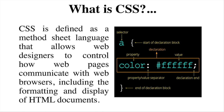CSS is a style sheet language that allows web designers to control how web pages communicate with web browsers, including the formatting and display of HTML documents. Various attributes such as color and their values are all stylings which can be used for displaying HTML documents, allowing web designers to control web pages and how they communicate with other web browsers.